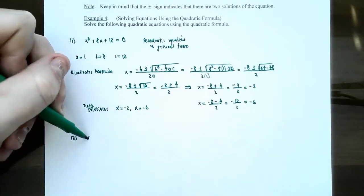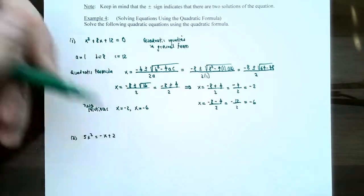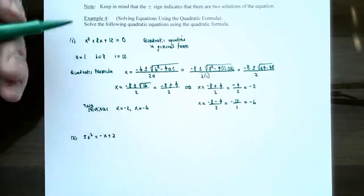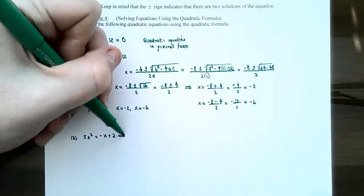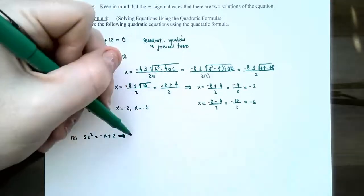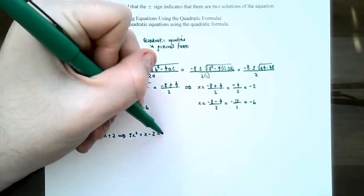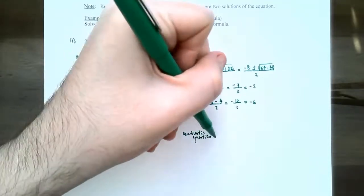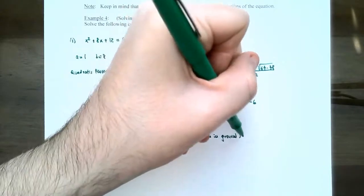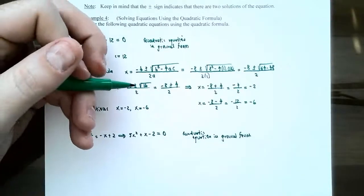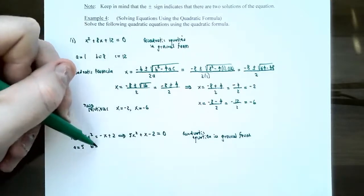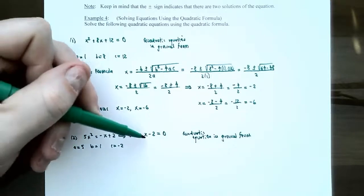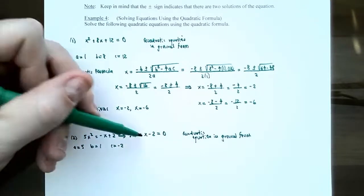Number 2: solve 5x squared equals negative x plus 2. This is a quadratic equation but it's not in general form. To rewrite it in general form, one side must be zero. Add x and subtract 2 to get 5x squared plus x minus 2 equals zero. Now it's in general form. It helps to write terms in descending order so you can clearly identify a equals 5, b equals 1, and c equals negative 2.